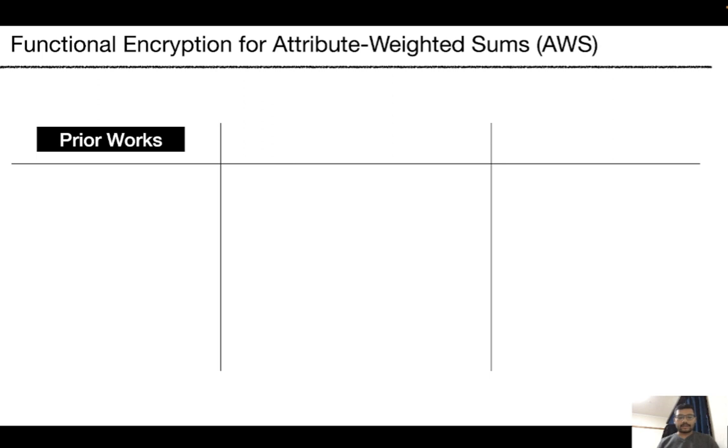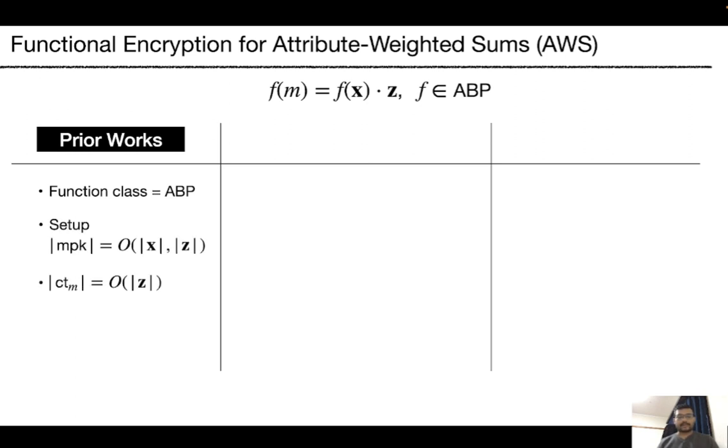Prior works built this primitive for function class ABP or arithmetic branching program. The master public key depends on the length of X and Z. The ciphertext size depends on the length of Z. Although the first work of Abdalla et al. considered only semi-adaptive security, last year we achieved adaptive simulation security.